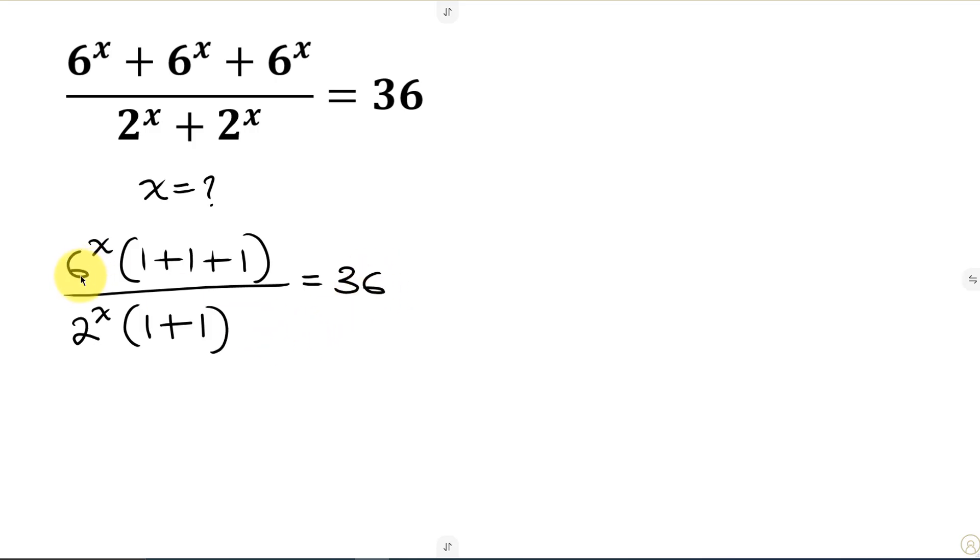Now when we simplify further, we have 6 to the power of x times 1 plus 1 plus 1 is 3 all over. Now the denominator, we have 2 to the power of x times 1 plus 1 is 2 and this is equal to 36.